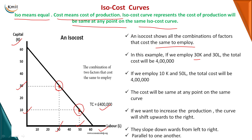If we want to increase production, the iso-cost curve will shift upwards to the right. If the cost is increased to 5 lakhs, this gives another curve above. If the cost is decreased to 3 lakhs, another curve falls below the actual curve line. These curves slope downwards from left to right, since capital and labor are substituted for one another, and remain parallel to one another.